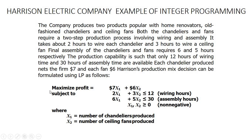The LP formulation is similar to standard linear programming. We maximize profit: 7x₁ + 6x₂, where x₁ is chandeliers produced and x₂ is ceiling fans produced. Constraints: 2x₁ + 3x₂ ≤ 12 (wiring hours); 6x₁ + 5x₂ ≤ 30 (assembly hours); and non-negativity: x₁, x₂ ≥ 0.